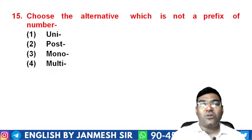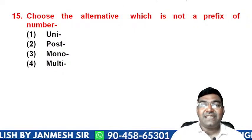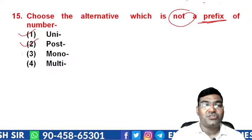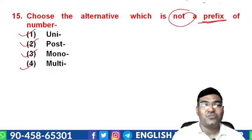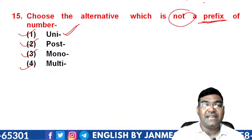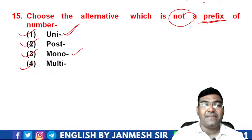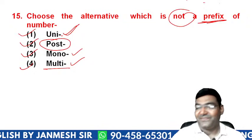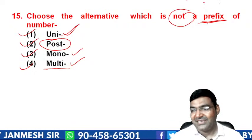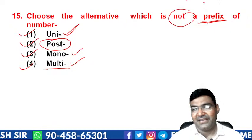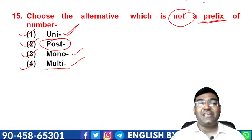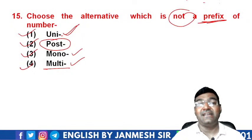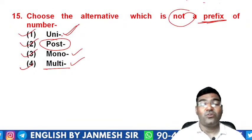Question 15: choose the alternative which is NOT a prefix of number. Options are 'uni', 'post', 'mono', 'multi'. 'Uni' means one — as in 'universal' or 'unidirectional'. 'Mono' means one — as in 'monogamy'. 'Multi' means many — as in 'multigamy'. But 'post-' indicates time or position after something, not number. So 'post-' is the answer — it is NOT a number prefix.